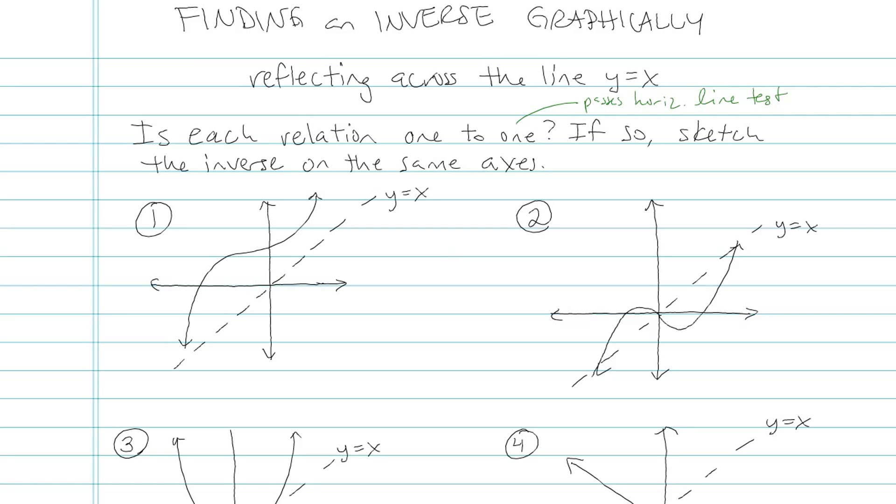1, yes, horizontal line test, fine. 2, not good. Look, there's a horizontal line that crosses it three times. Not 1 to 1. And if it's not 1 to 1, that means it doesn't have an inverse.